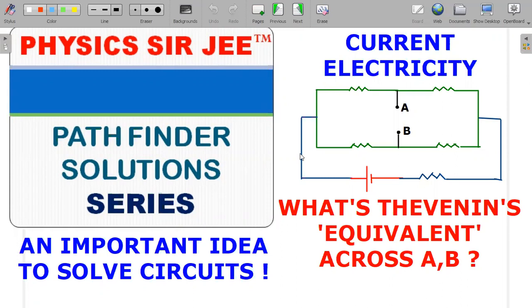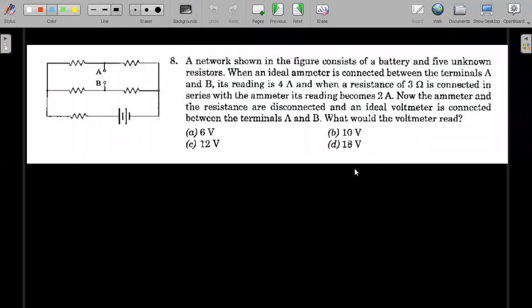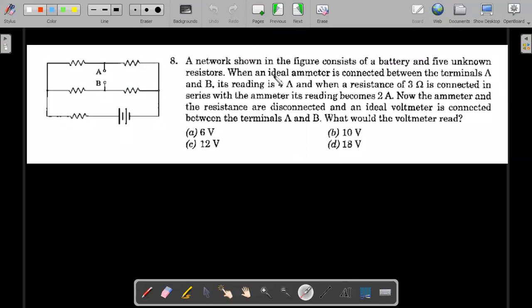So let's move ahead for the formal wording of the question. You have a circuit in front of you which contains a battery and five unknown resistors. When an ideal ammeter is connected between terminals A and B, the reading is 4 ampere. And when a resistance of 3 ohm is connected in series with the ammeter, its reading becomes 2 amperes. So there are two cases, two readings he has given across AB.